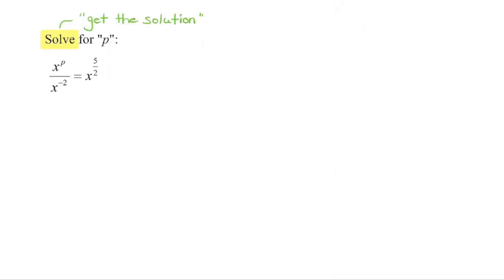In our final example we have an equation, and we need to solve for the variable p — find what value of p makes the left side equal the right side. First, see if you can simplify either side. On the right we have a single power. On the left we're dividing two powers with the same base, so we subtract the exponents: p minus negative 2. A minus times a negative becomes a positive, so we simplify to the same base with exponent p plus 2, equal to the right-hand side.